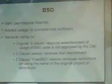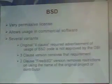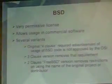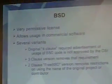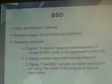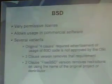The original open source license was created for the Berkeley Software Distribution of Unix back in the late 70s, early 80s. It is an extremely permissive license. It actually does allow you to use it for pretty much anything that you want, including in commercial software.